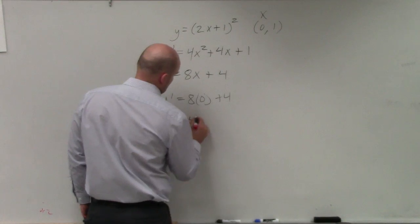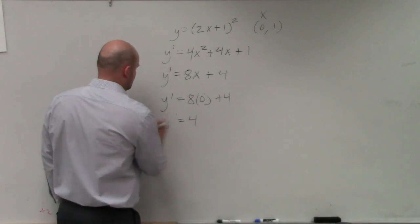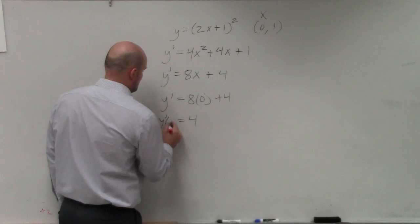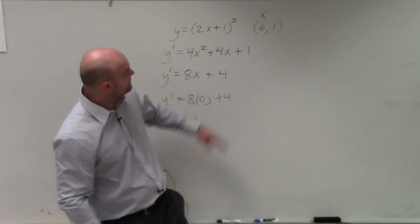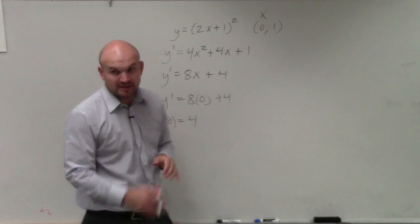And you can see that that value is going to be equal to, or y sub 0, is equal to 4. So therefore, the slope of the function at our point (0, 1) is going to be 4.